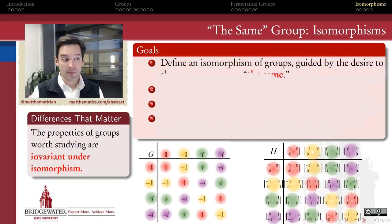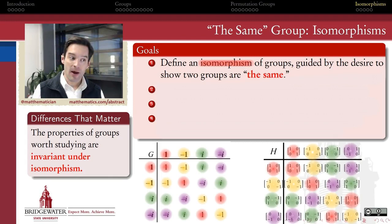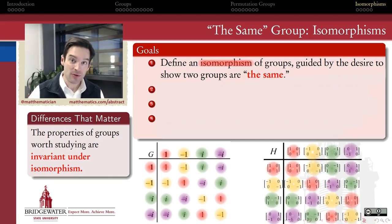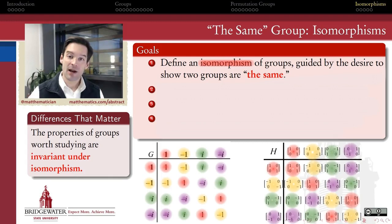So in this video, we want to talk about how to define the idea of an isomorphism of two groups, guided by the desire to show that two groups are, in fact, the same. If there are differences between those two groups, those differences are superficial, and we don't want to care about them. So what does an isomorphism look like? What kinds of properties do we require that it has?